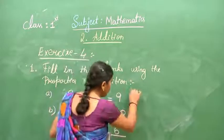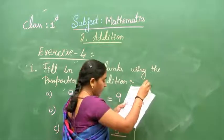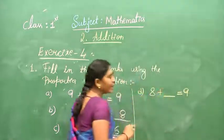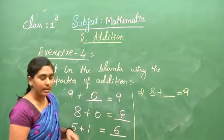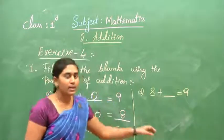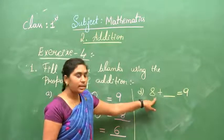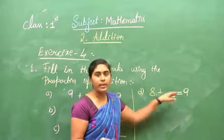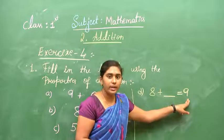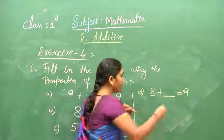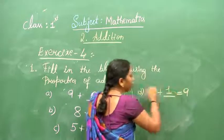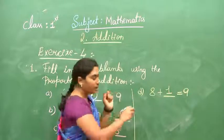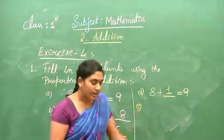Next question: 8 plus blank equals 9. We are given 8, and 8's next number is 9. So we need to write 1 in the blank — the number that gives the next number after. 8 plus 1 equals 9.